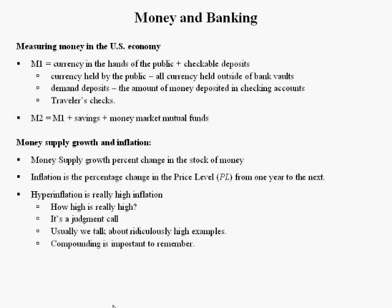After the third year of 10% inflation, that $100 item is now $133.10. After the fourth year, it's $146.41. After the fifth year, it's $161.05. After the sixth year, it's $177.16. After the seventh year, that $100 item has nearly doubled in price to $194.87.